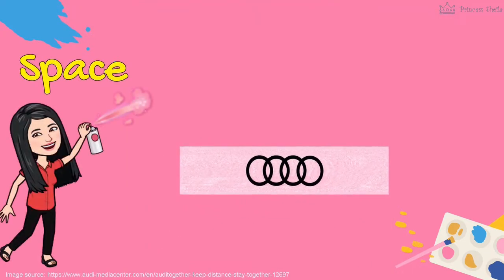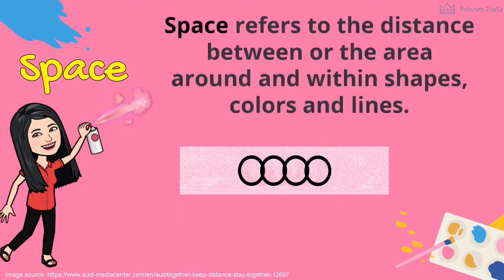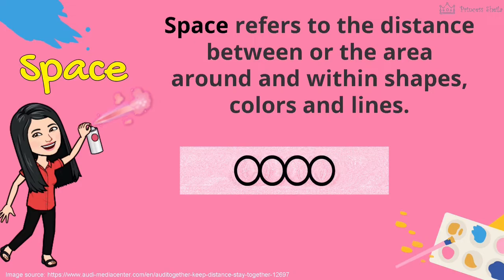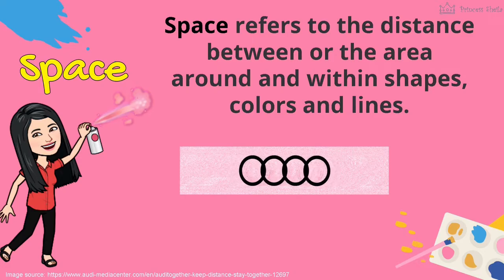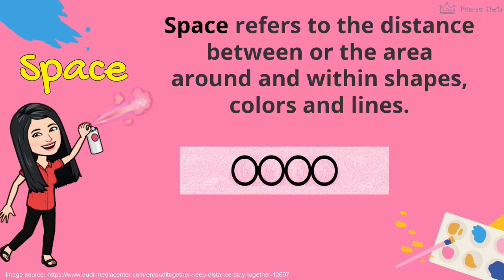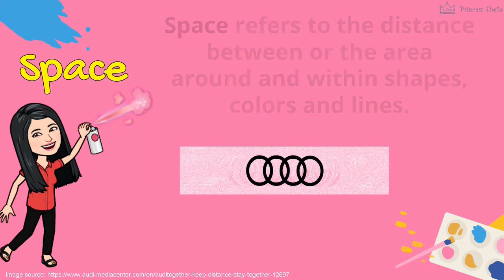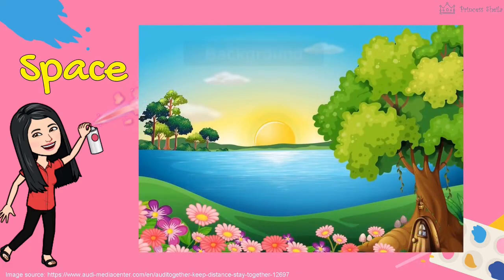Fourth is space. Artists think of how lines, shapes, and color are placed together. The placement of these other elements creates space. Space refers to the distance between, or the area around and within shapes, colors, and lines. It includes the background, foreground, and middle ground.